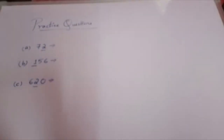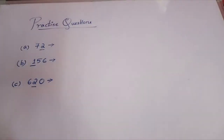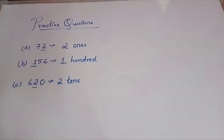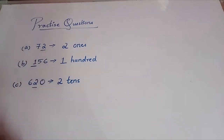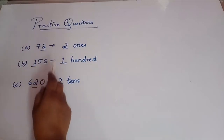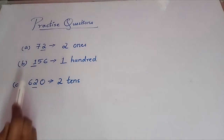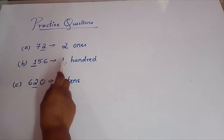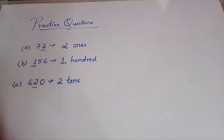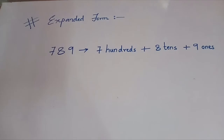Children, here are your practice questions — 3 questions. Pause the video, solve them yourself, and then see the answers. Now let's check: First, 72 — 2 is underlined, so the answer is 2 ones. Second, 156 — 1 is underlined, so the answer is 100. We write 100 because it is only 1; if it were 256, we would write 200. Third, 620 — 2 is underlined, so the answer is 2 tens.